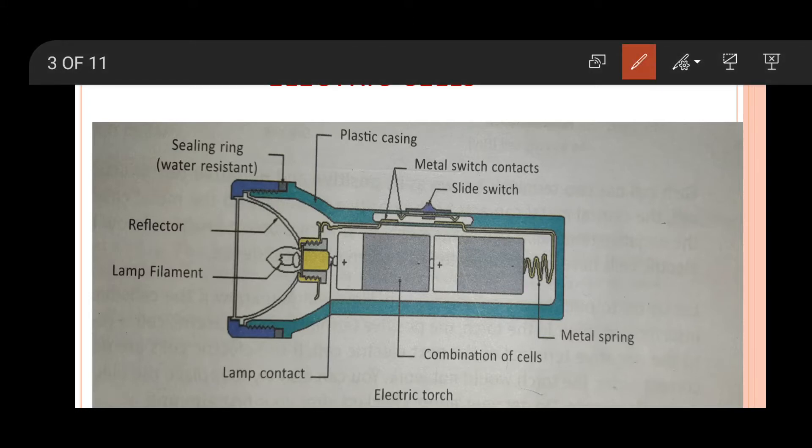When the electric supply was restored, their father asked them to look at the parts of the electric torch. They found there are three main parts: electric bulb, cell or combination of cells which is known as battery, and the switch.